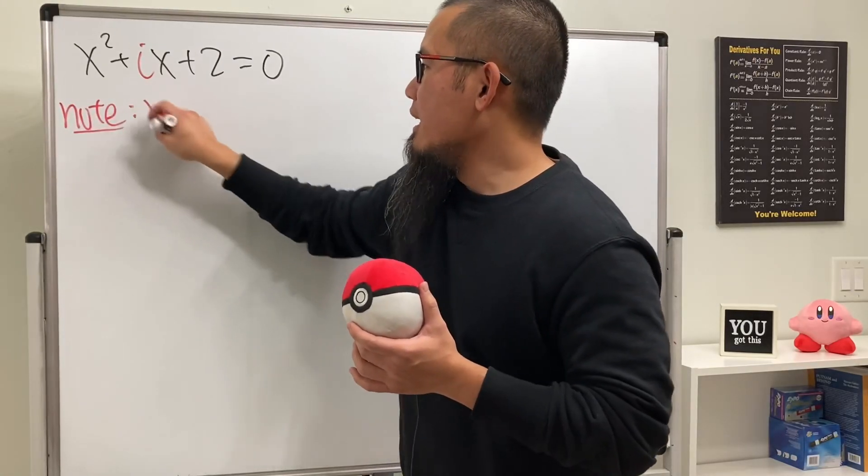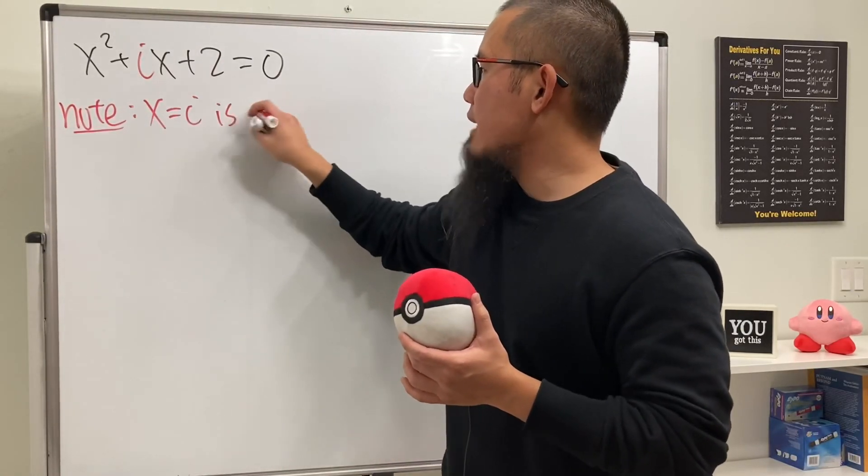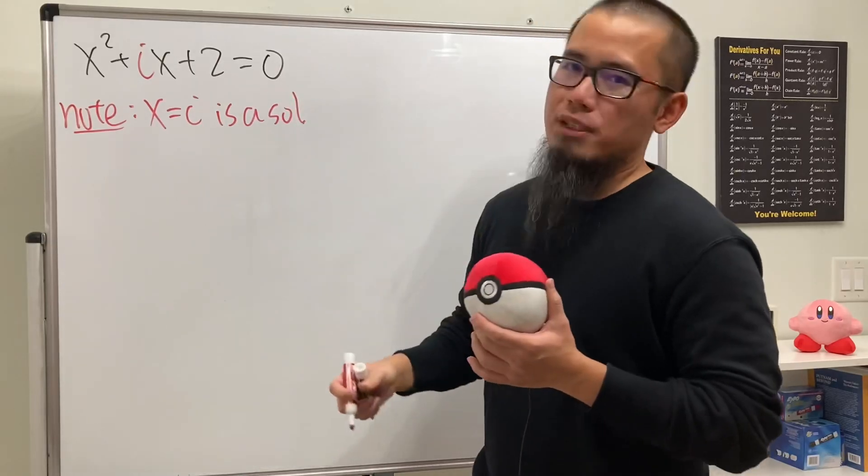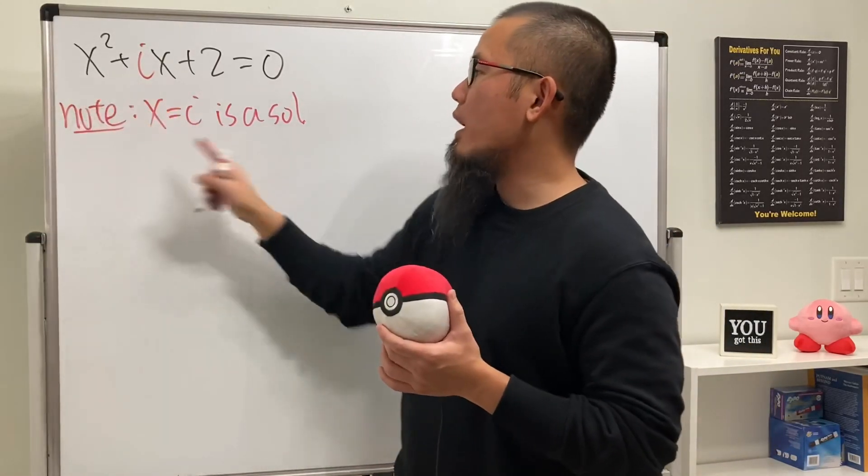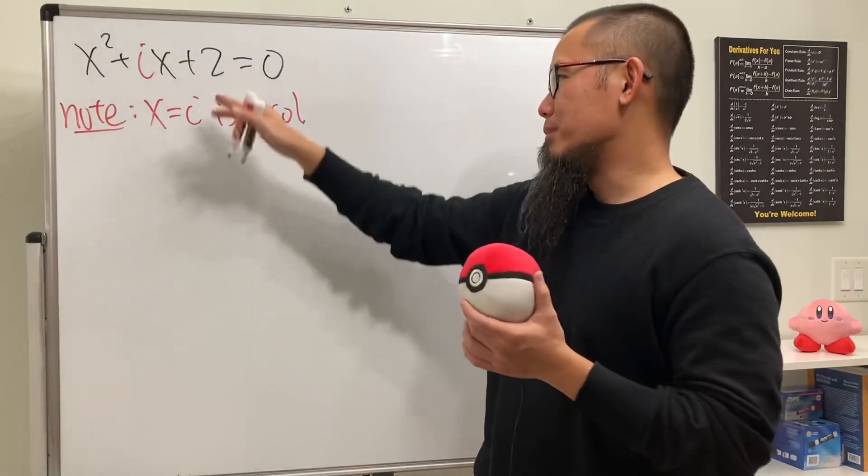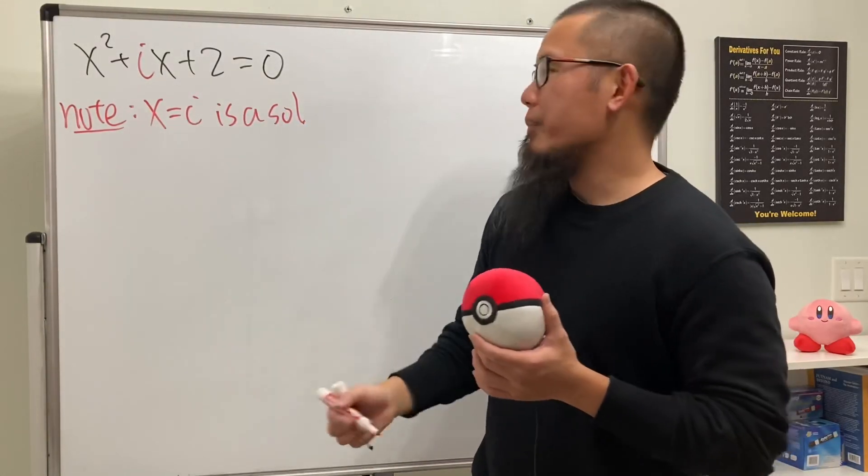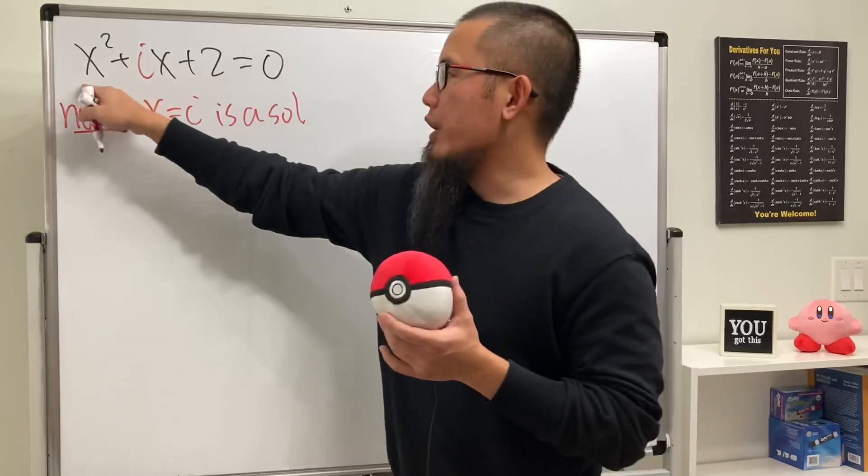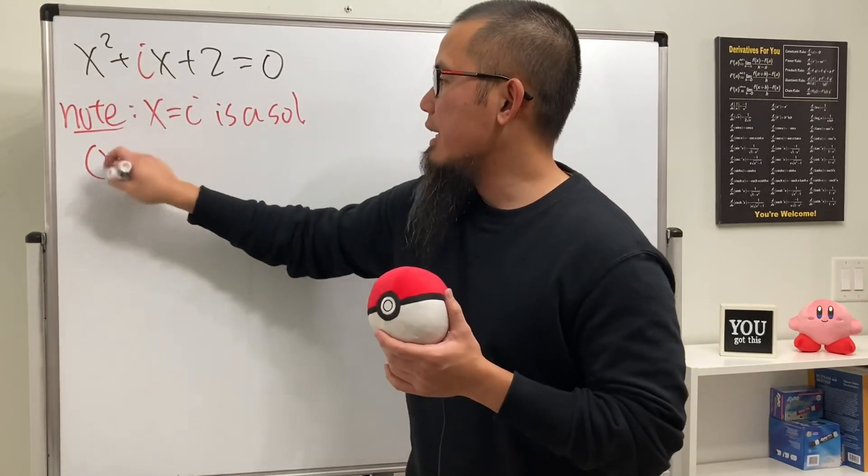Notice x equals i is a solution by inspection. Because i squared is negative 1, i times i is again negative 1, and then plus 2 we just get 0. Once we know that, we know this can be factored as x minus i.